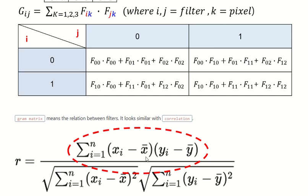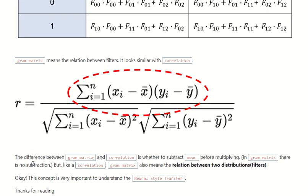The difference between the Gram matrix and correlation is whether to subtract the mean before multiplying. In the Gram matrix, there is no subtraction.